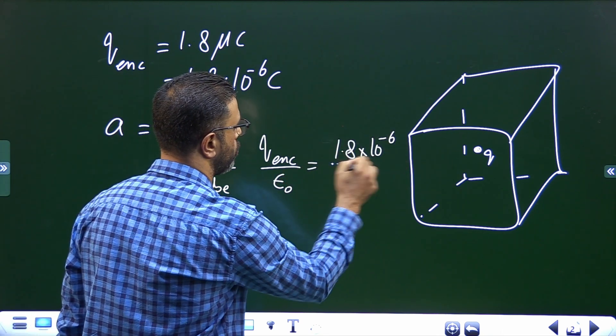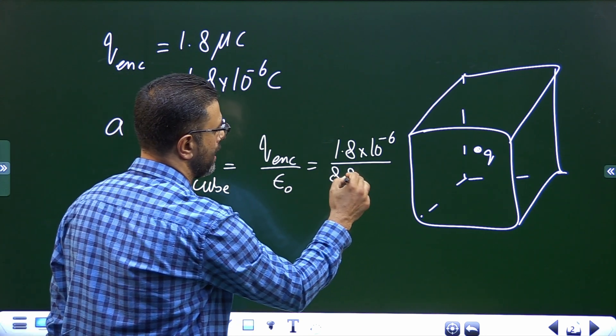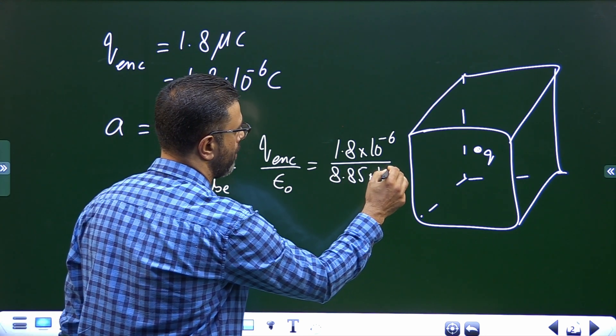We already know Q enclosed, that is 1.8 micro coulomb, 1.8 into 10 to the power minus 6 coulomb, divided by epsilon 0 is 8.85 into 10 to the power minus 12.